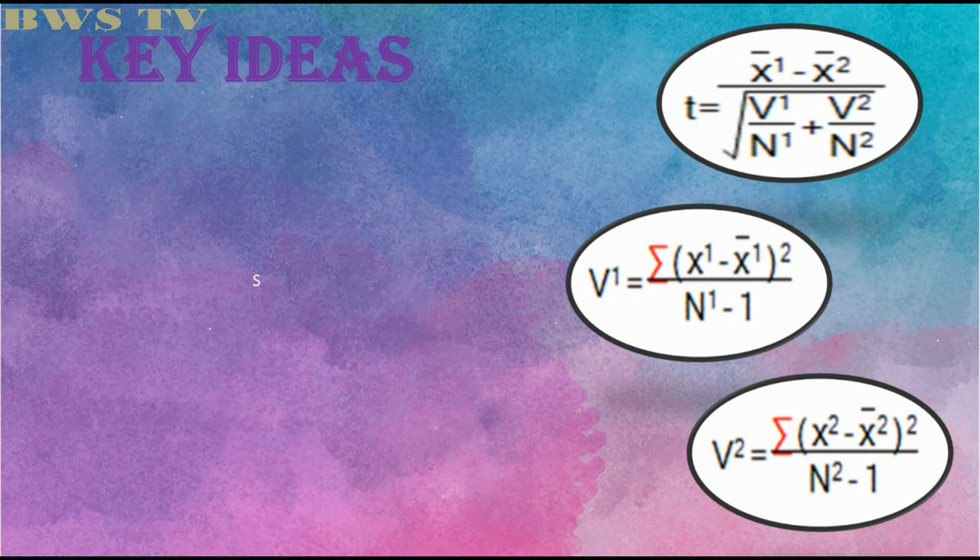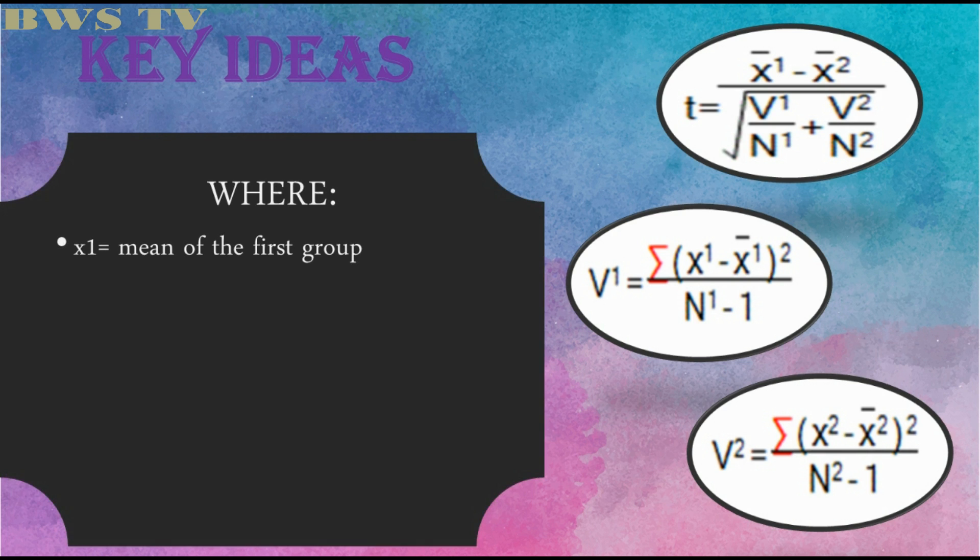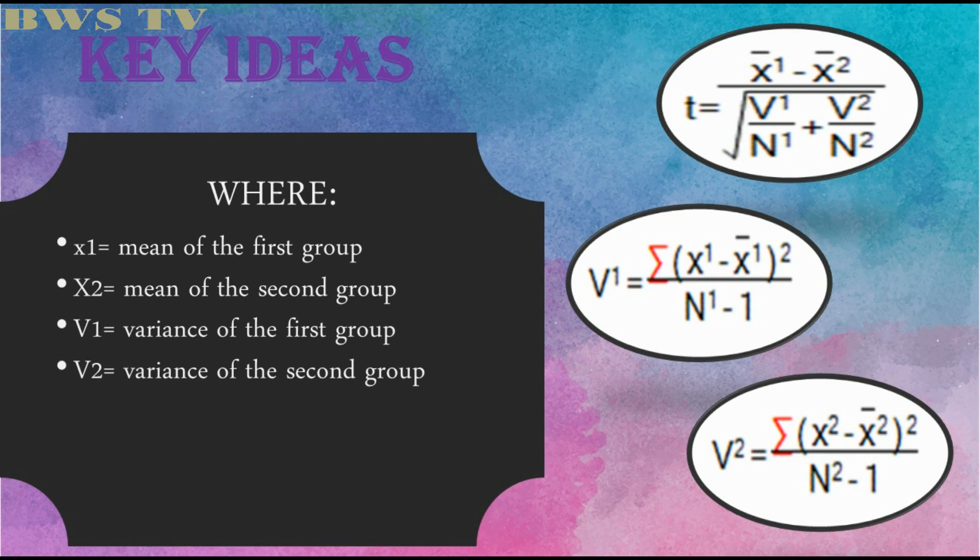Wherein x̄1 is the mean of the first group, x̄2 is the mean of the second group, v1 is the variance of the first group, v2 is the variance of the second group, n1 is the population of the first group, and n2 is the population of the second group.